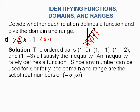Now let's go ahead and read the solution here. It says the ordered pairs 1, 0, 1, negative 1, 1, negative 2, 1, negative 3, all satisfied the inequality. They just took numbers in the shaded region there. Notice the x's do not differ. An inequality rarely defines a function. Since any number can be used for x or y, the domain and range is going to be all real numbers. In that shaded region, it'll go on forever and ever in that opposite direction.